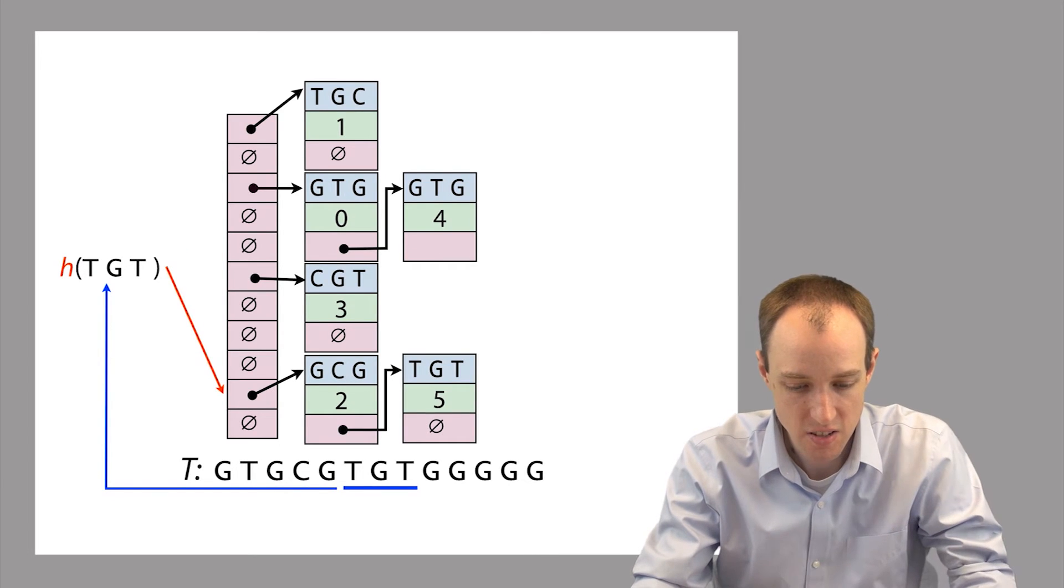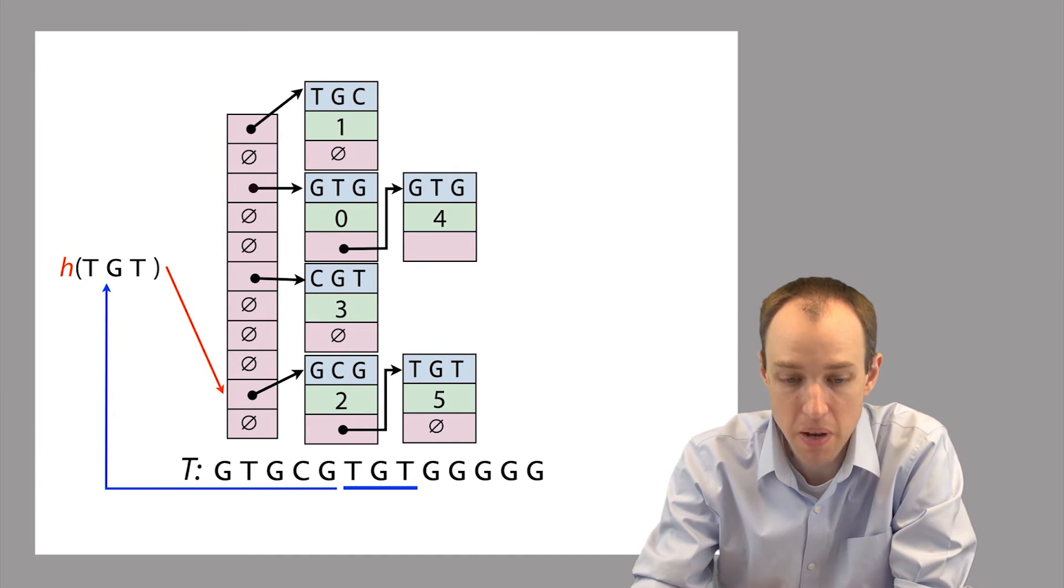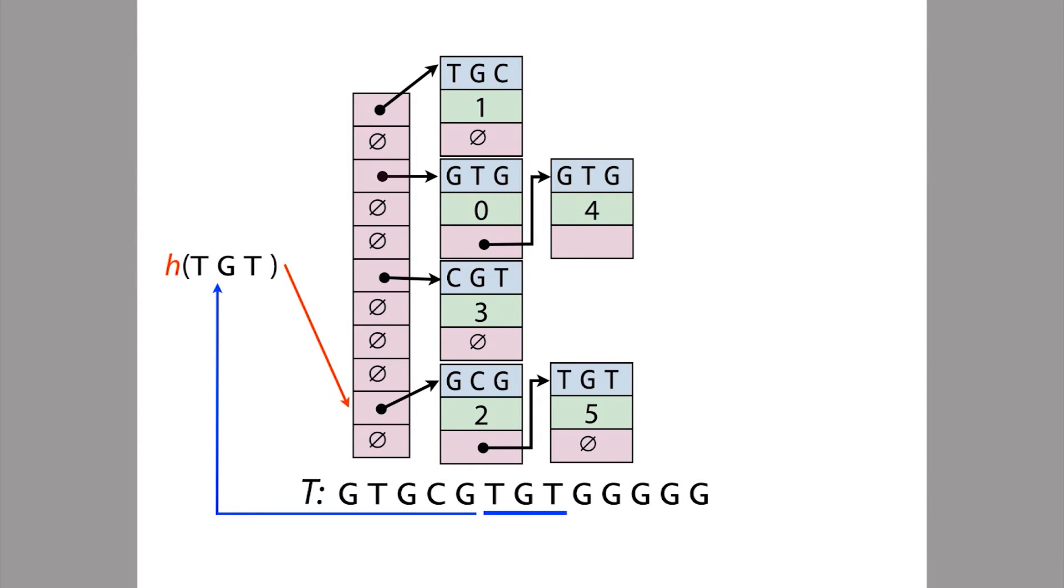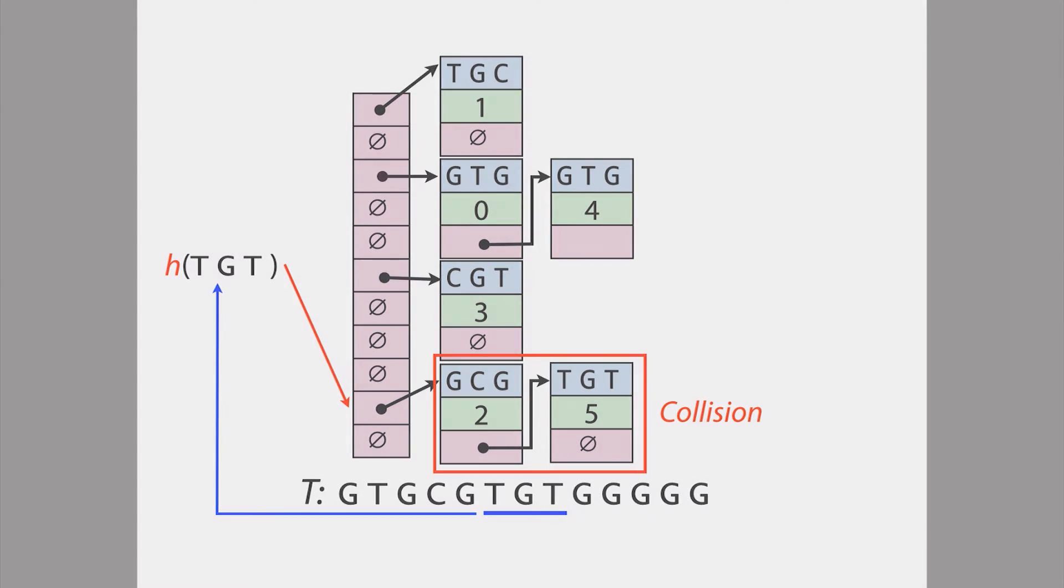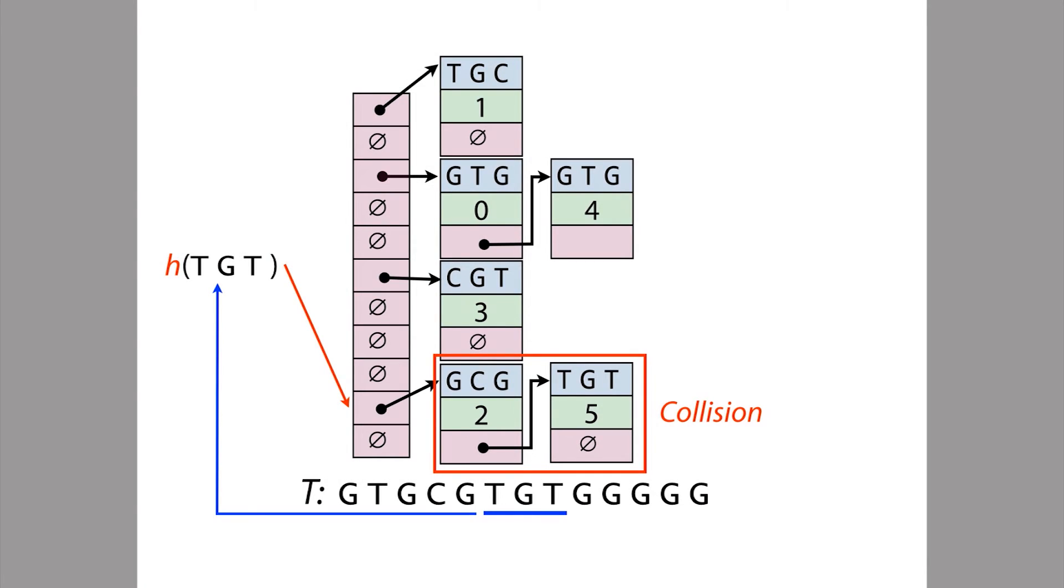So moving on, the next 3mer is TGT. So let's say the hash function assigns TGT to this bucket. So again, we'll append the corresponding entry onto the end of the list. Now if we stop and consider the entries that are in this bucket now, the one toward the bottom of this slide, we notice that two different 3mers are now both present in this bucket. This isn't too surprising since we have many more possible 3mers than we have buckets here. So the pigeonhole principle tells us we expect some distinct 3mers to end up in the same bucket together like this. But when this happens, we call this a collision. And when there are many collisions, then querying the data structure can become somewhat slower. But it does happen now and then, and it's not a terrible thing. But it's something to take note of.